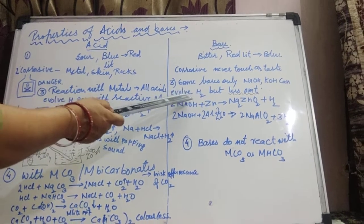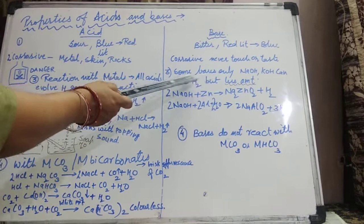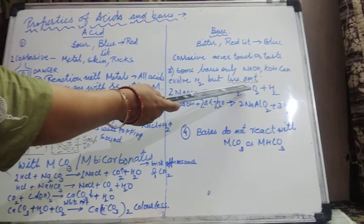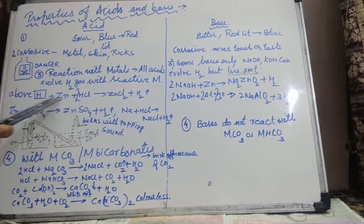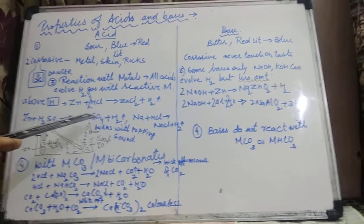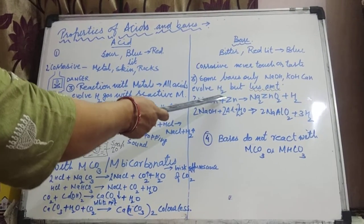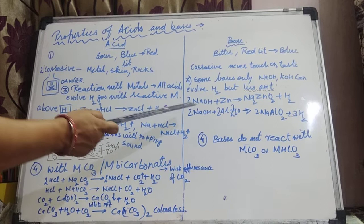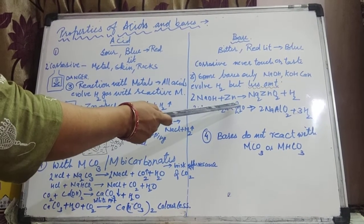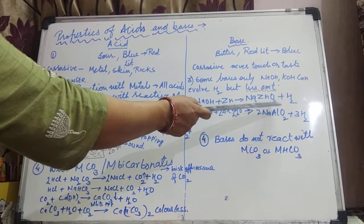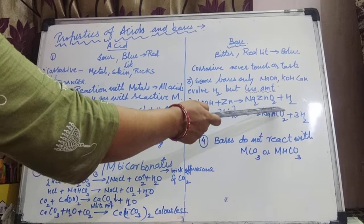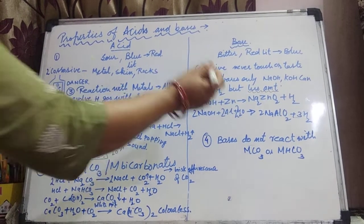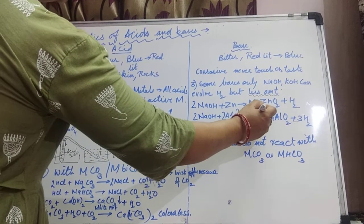In case of bases now — some bases, not all. Some bases like NaOH and KOH can also evolve hydrogen gas, but in less amount. With bases, less amount of hydrogen gas evolves out in comparison to acid. Taking an equation: NaOH when reacting with zinc metal gives Na₂ZnO₂ plus hydrogen gas. The name of Na₂ZnO₂ is sodium zincate.